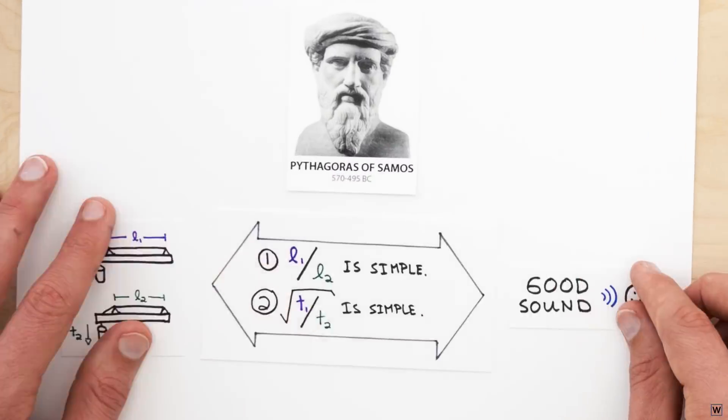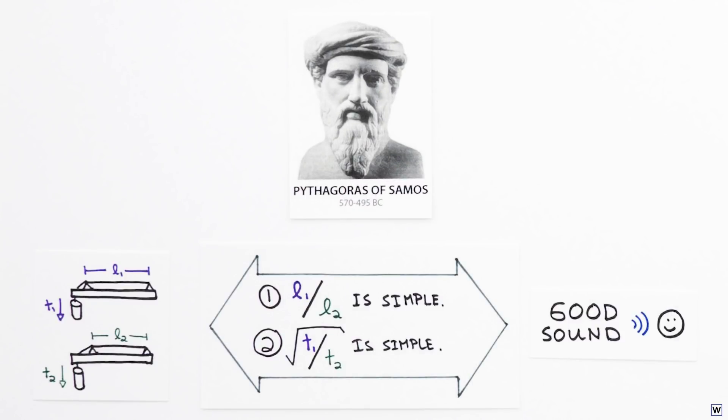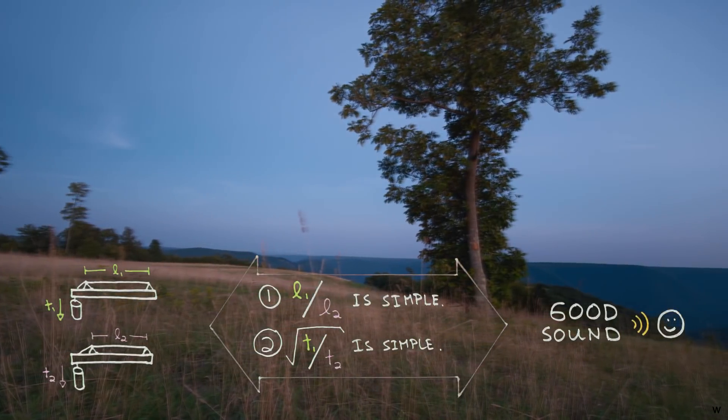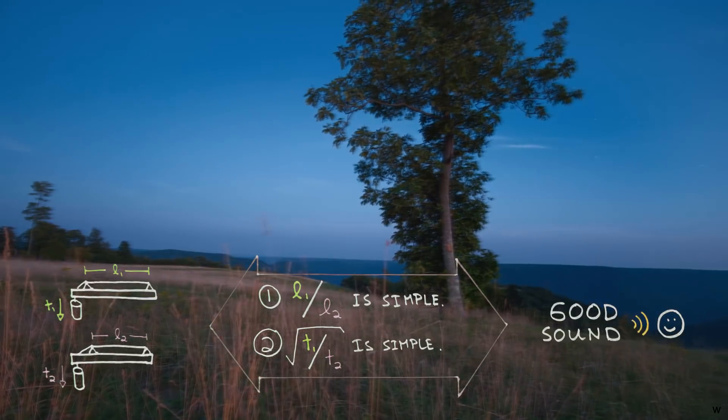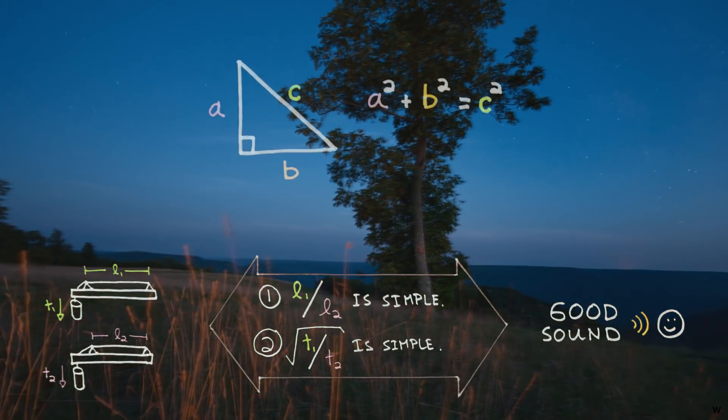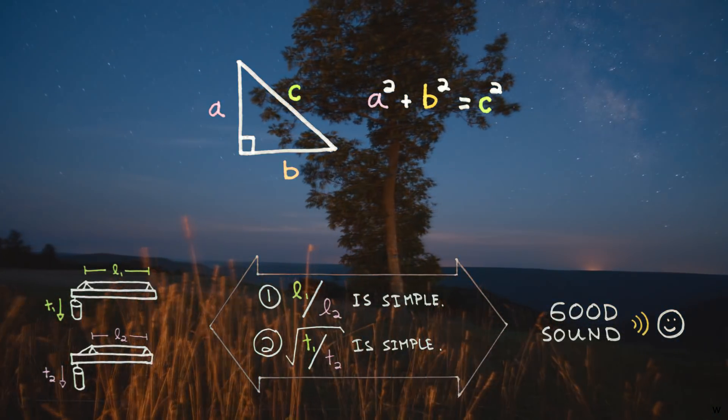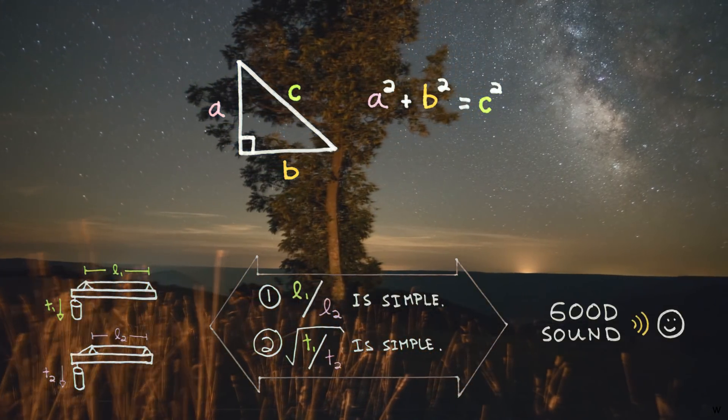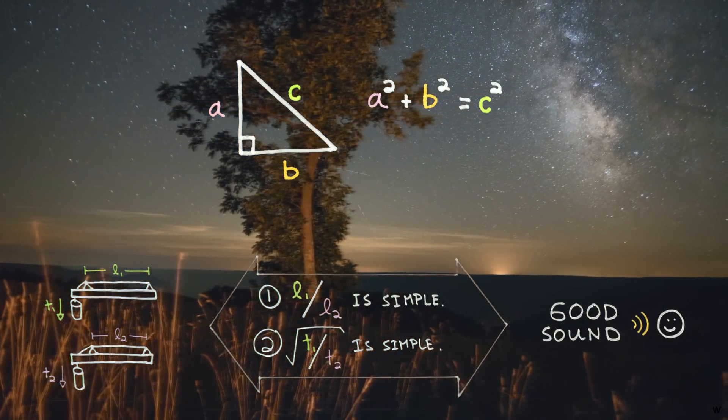This information was helpful for early instrument makers. But what's really interesting here is how these discoveries changed the way we humans think about the universe we live in. These discoveries, along with another interesting Pythagorean discovery involving right triangles, really got Pythagoras and his followers thinking. Why is it that mathematics is able to predict what we observe in the world around us?